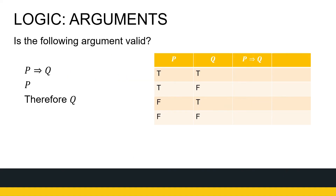Let's do one more. Here's my argument — we've got no sentences, no story, only statements P and Q. My hypothesis is: P implies Q, and P. So that means I'm telling you both of those are true. My conclusion is Q, meaning Q has to be true. Let's see if that argument is valid.